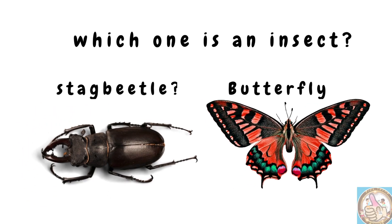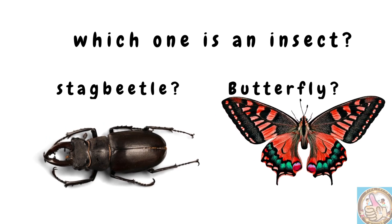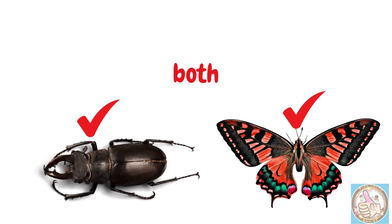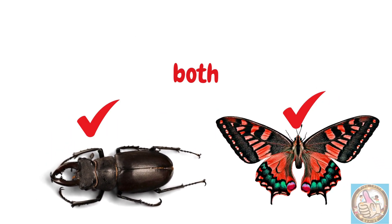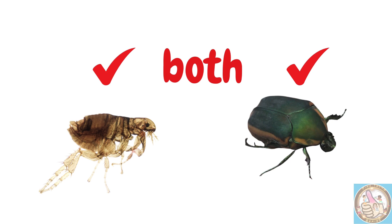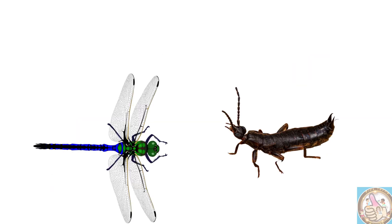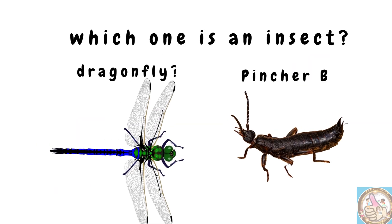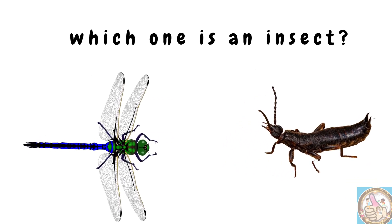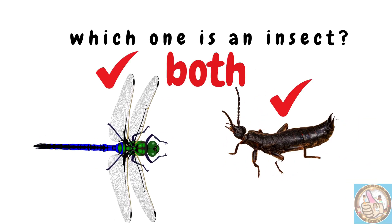Which one is an insect — stag beetle or butterfly? Both! Which one is an insect — flea or June bug? Both! Which one is an insect — dragonfly or pincher bug? Both!